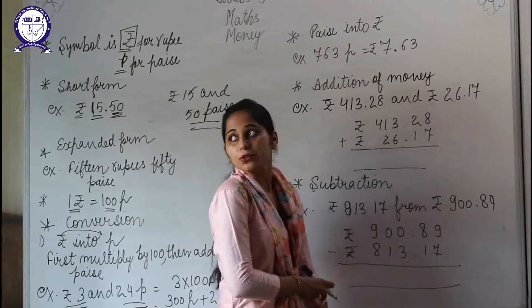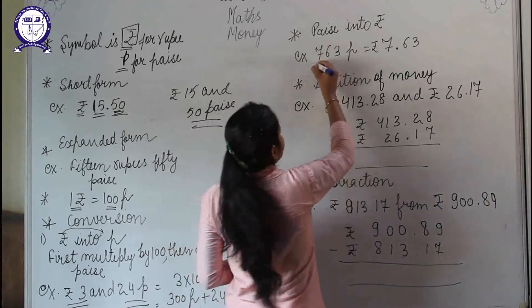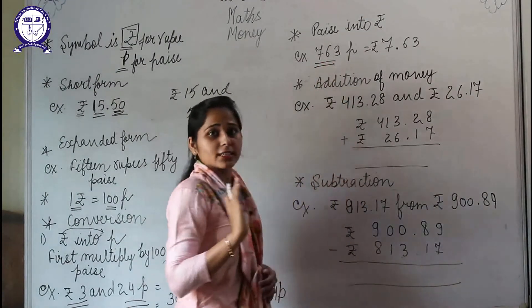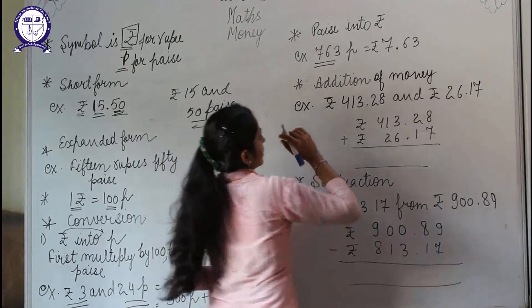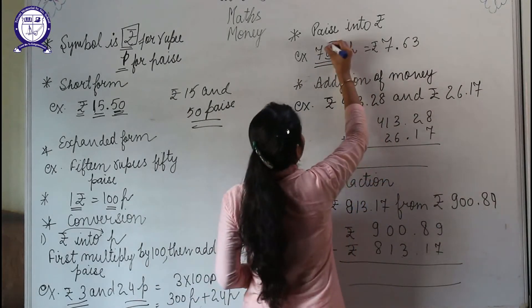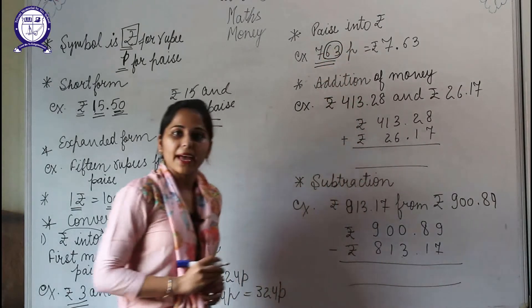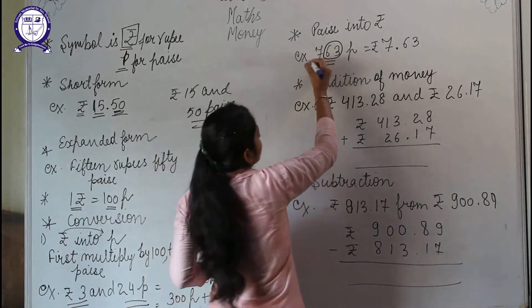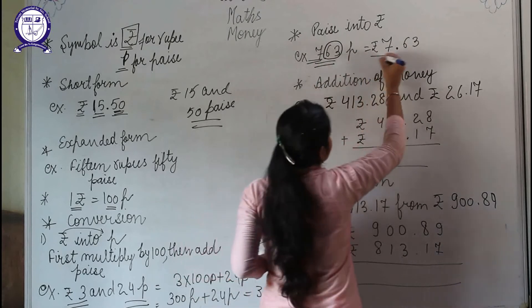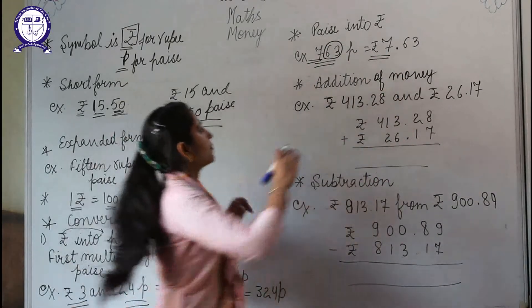smaller unit to larger unit. We have 763 paise in this example. What we will do: the last two numbers will represent paise and the leftover digits on the left side will represent rupees. Then you put the rupee sign. So ₹7.63—here 7 is representing rupees and 63 is representing paise.